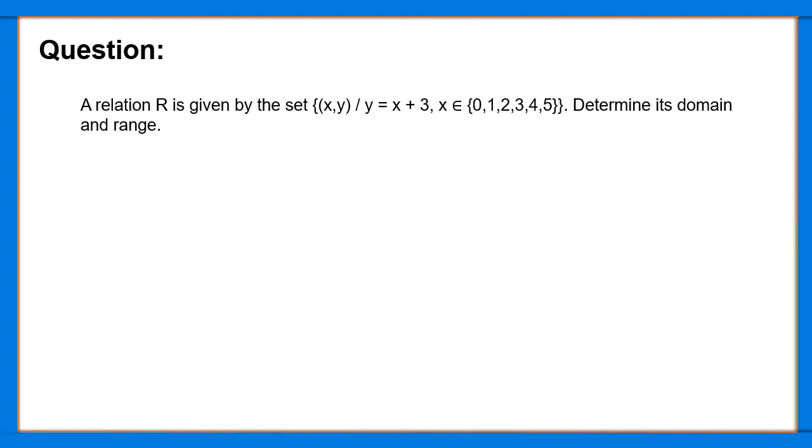Question: A relation R is given by the set (x, y) where y equals x plus 3, and x equals 0, 1, 2, 3, 4, 5. Determine its domain and range.